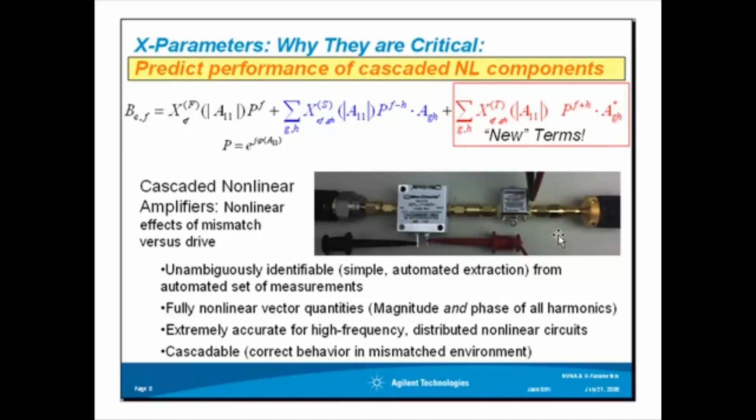Here are off-the-shelf mini-circuits amplifiers, two of them, that were measured with the NVNA. We drive the first one very hard to generate harmonics, and the second one is not perfectly matched with the output of the first one. So, what are we going to get at the output of this cascade?